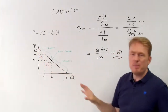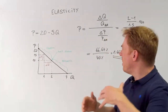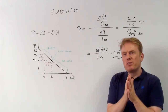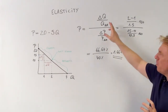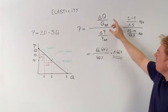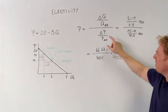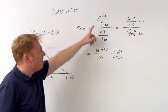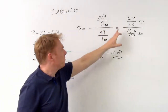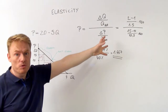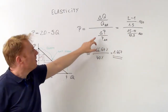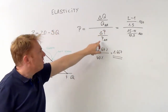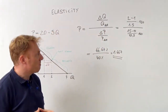This is the demand function indicating the relationship between price and quantity. We want to consider the price elasticity, which is the coefficient of the relative change of quantity divided by the relative change of price — the absolute change of quantity divided by the average quantity, multiplied by 100, divided by the total change of price divided by the average price.